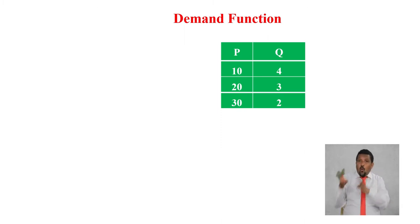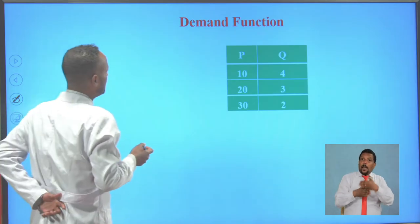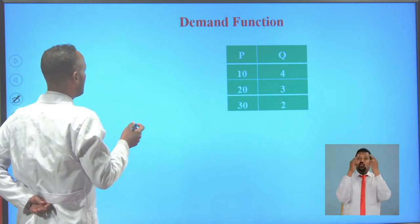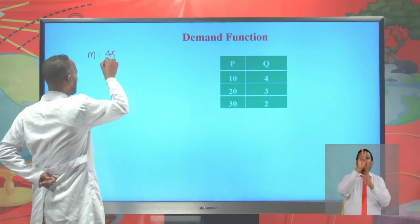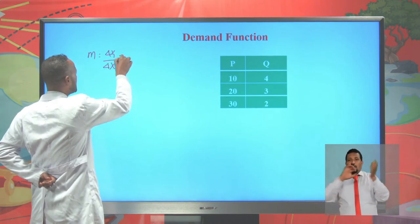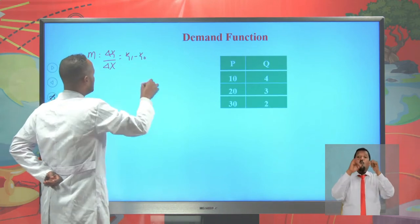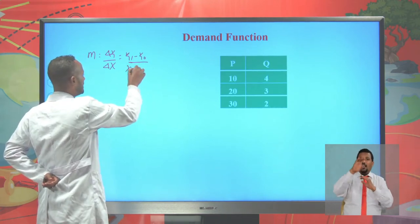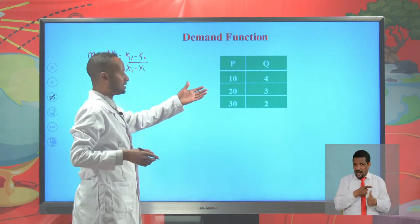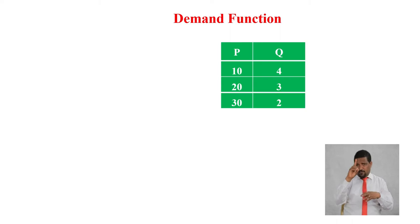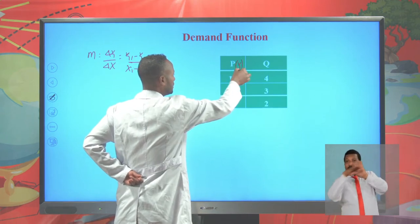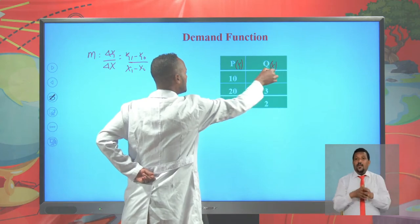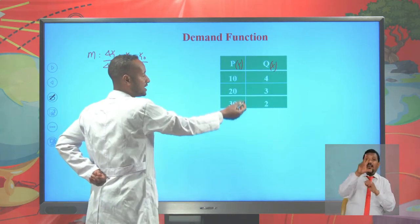The first step to derive the demand function is calculating the slope. The slope is mathematically calculated by dividing the vertical difference (change in y) over the horizontal difference (change in x), which is y-final minus y-initial over x-final minus x-initial. By taking any two coordinates, we can calculate the slope. We represent price values on the y-axis and quantity demanded values on the x-axis.